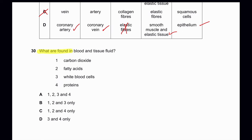Question 30: What is found in both blood and tissue fluid? In blood and tissue fluid we can find carbon dioxide, fatty acids, white blood cells, and proteins. So option A — listing all of these materials — is the correct answer, as all are found in both blood and tissue fluid.